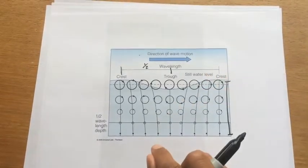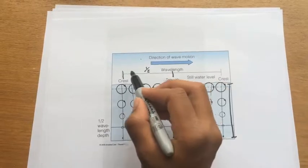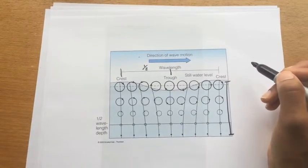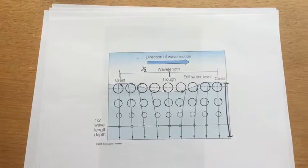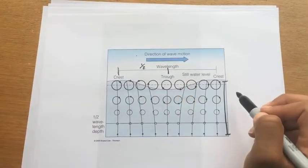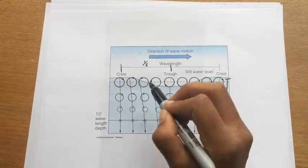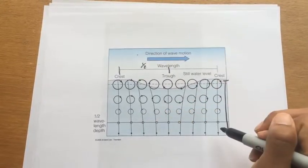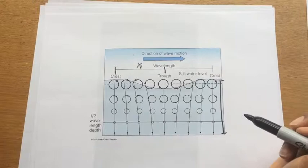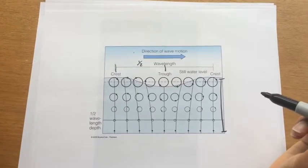In deep water, the speed of the wave moving across the water depends only on the wavelength. So the longer the wavelength in deep water, the higher the speed — waves with really long wavelengths move really fast. But in shallow water, when the depth is less than half of the wavelength, the speed of the wave depends on the depth, because the depth of the water is too shallow and there's more friction with the little orbital paths of the wave, which slows the propagation of the wave.